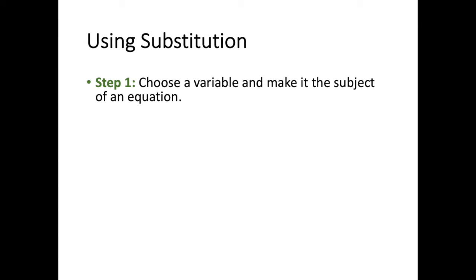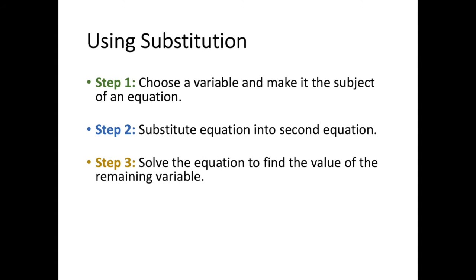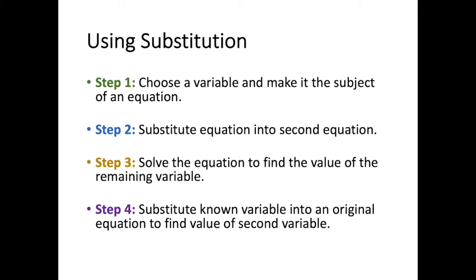The steps for using substitution: step one is to choose a variable and make it the subject of an equation — so that means x equals or y equals, with x or y on one side. Step two is to substitute that equation into the second equation, replacing the variable. Step three is to solve the equation to find the value of the remaining variable, then substitute that known value back into the original to find the second variable, and write the answer.